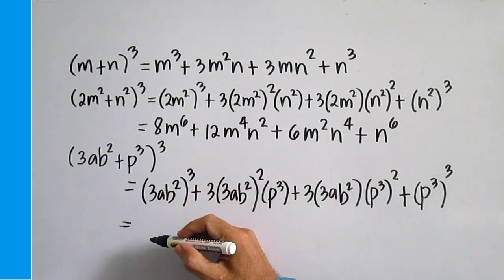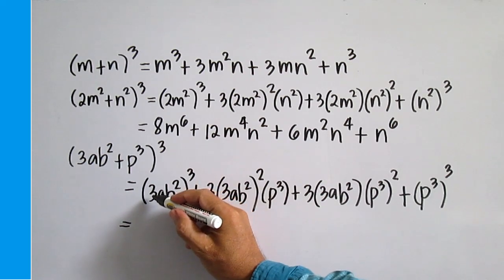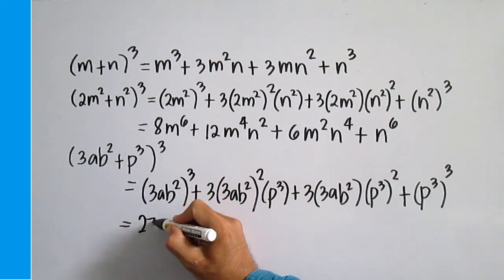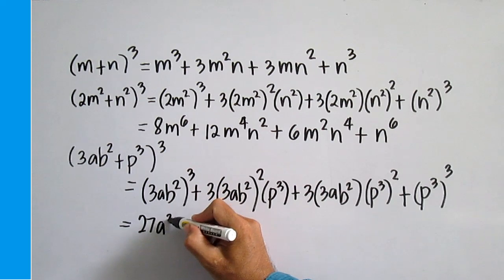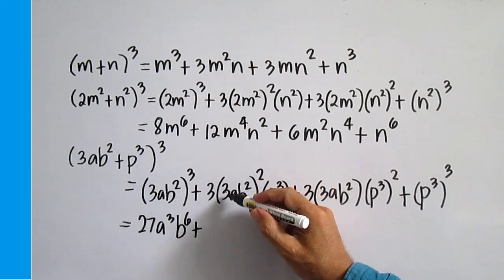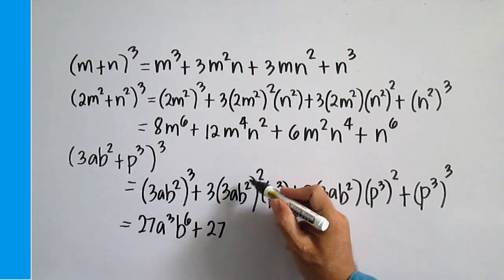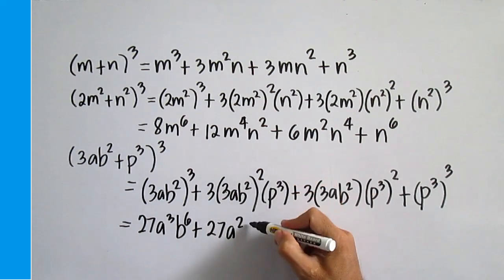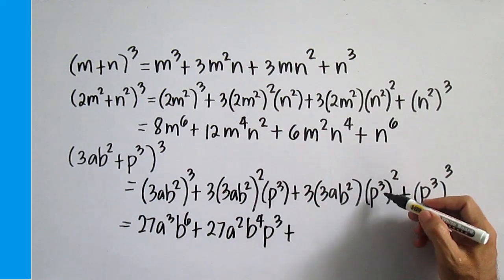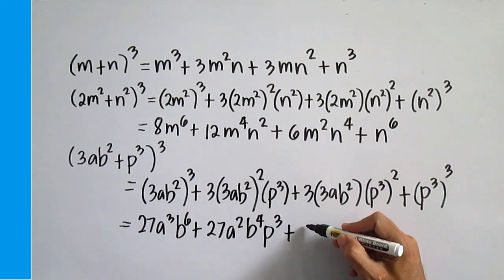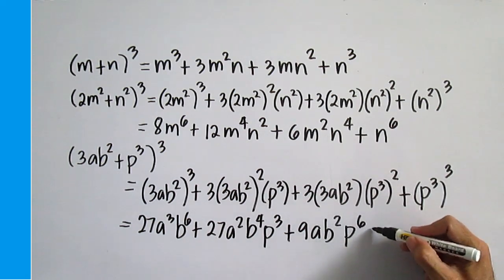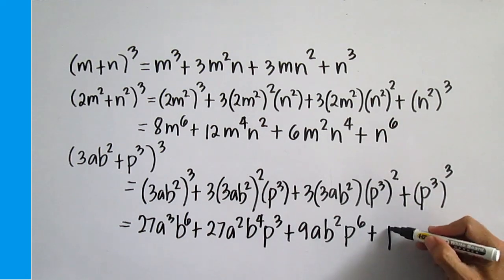Simplify. This is equal to 3 cubed: 3 times 3 times 3, 9 times 3 is 27, a cubed, p to the power of 6. Plus 3 times 3 is 9, times 3 is 27, a squared, p to the power of 4. Plus 3 times 3 is 27, a squared, p to the power of 4, p cubed. Plus 9, a, p squared, p to the power of 6. Plus p cubed cubed is p to the power of 9.